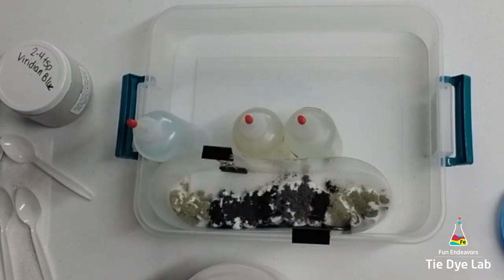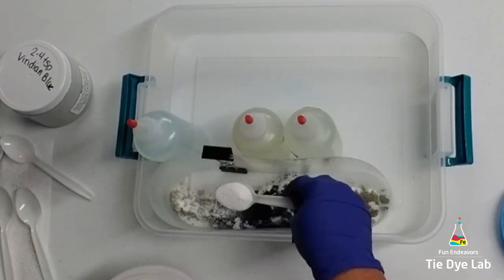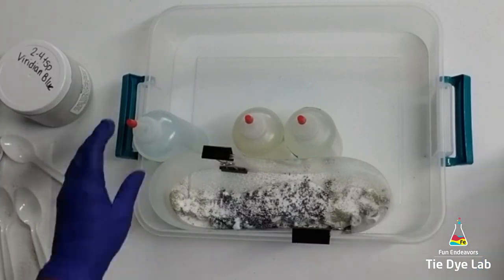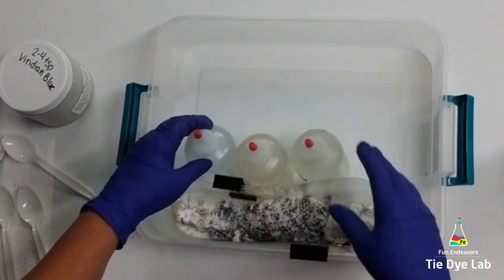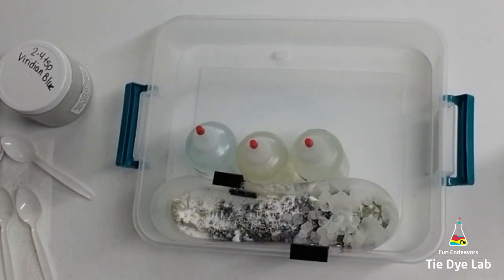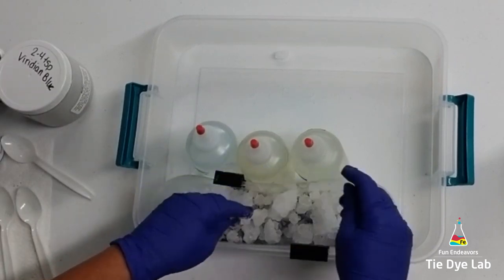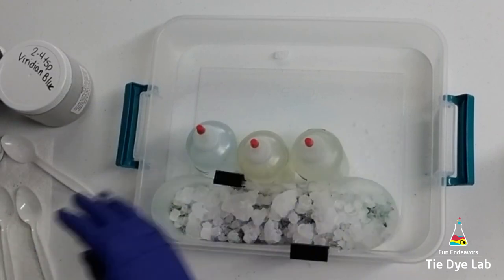I'm going to put some soda ash on top and then load on the ice. I'm using pieces of plastic cutting board that I've cut into strips and held together with binder clips to make myself a little barrier to put my ice down in. Then I'm using some dye bottles that I've just filled with water to kind of hold it all in place.